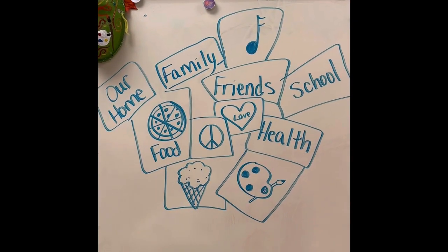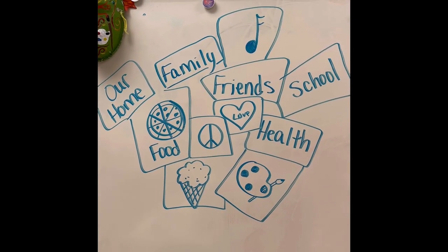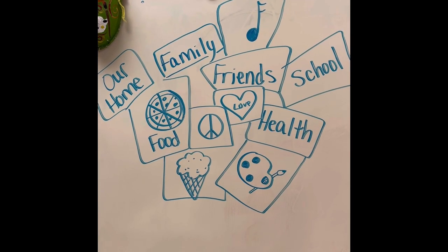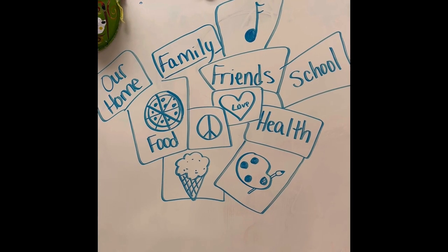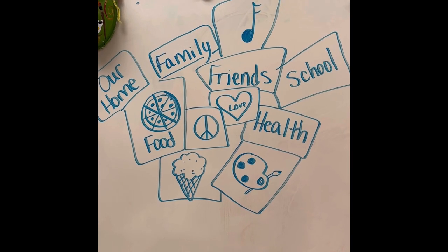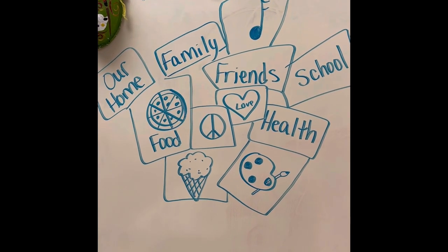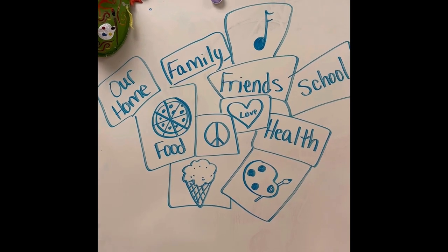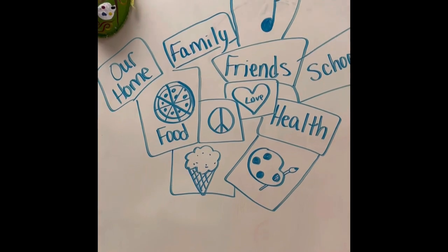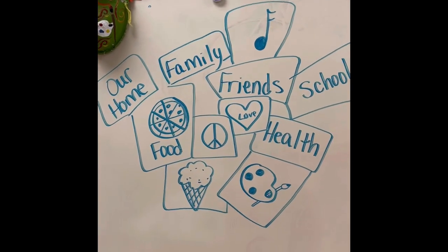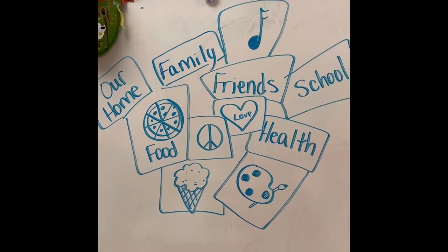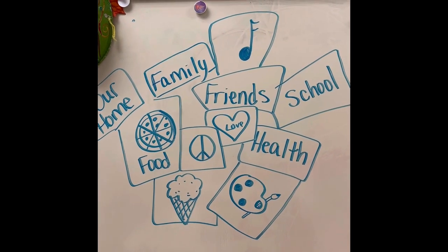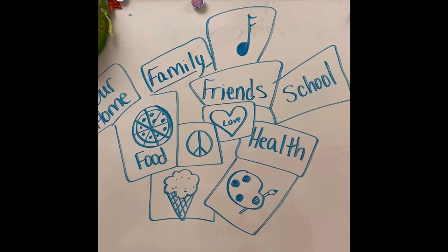Here's my example and I'll leave it up on the board for you to look at, just to give you an idea. Notice that I wrote out things I'm thankful for: our home, my family, my friends, school, music, food, art, health, even ice cream and pizza. It can be as serious as you want or as light-hearted as you want — just anything you are grateful for. I want you to spend a lot of time making your list and your sketches and really coming up with ideas of what you're grateful for.